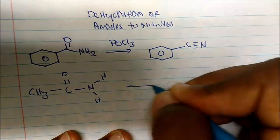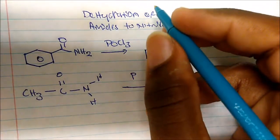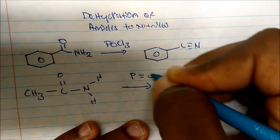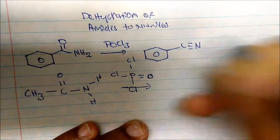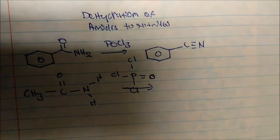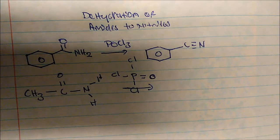And react it with phosphorus oxytrichloride, but the molecule looks something like this - it's a phosphorus that's double bonded to an oxygen with three chlorines around it. So this is how phosphorus oxytrichloride looks.